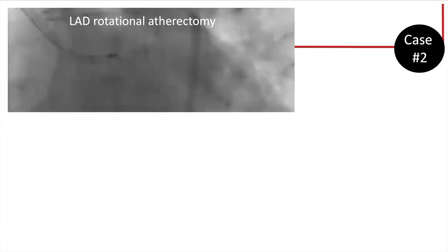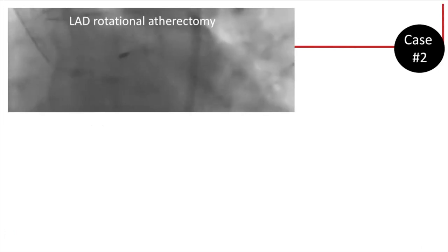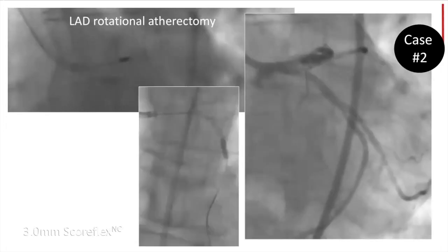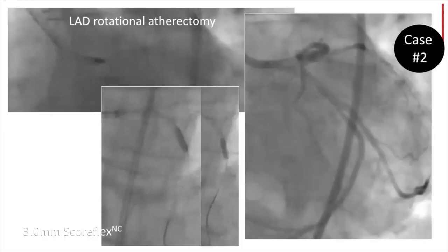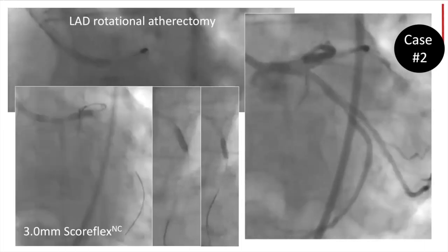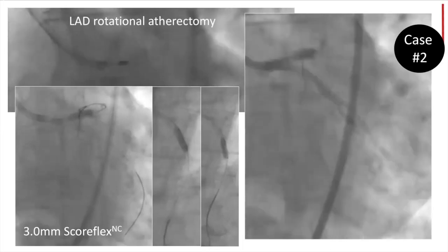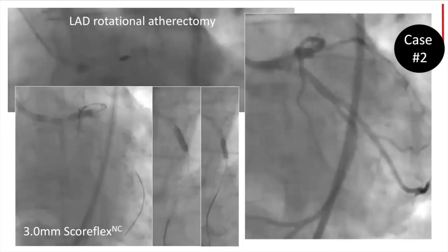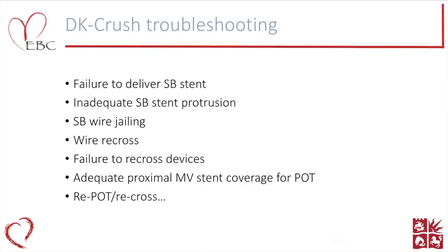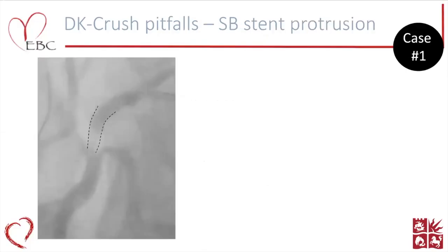Through that second case, I've already alluded to this need for very aggressive lesion preparation. We also had to debulk the LAD, and beyond that, in my practice I will often adopt a cutting or scoring balloon following rotablation to ensure adequate expansion of both side branch ostia. Beyond that, we have to consider the placement of our side branch stent.